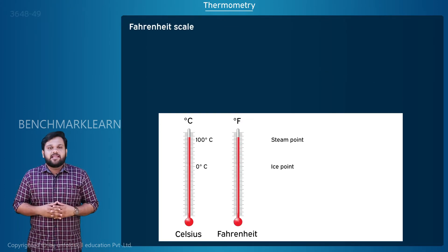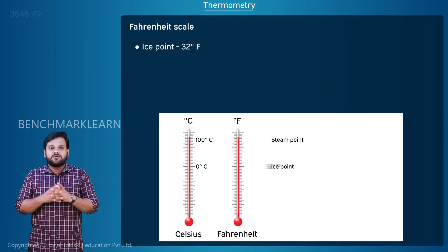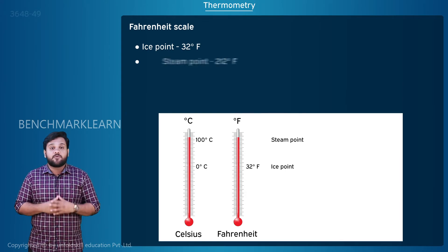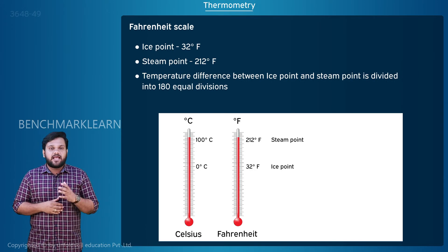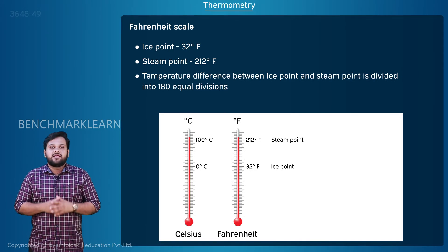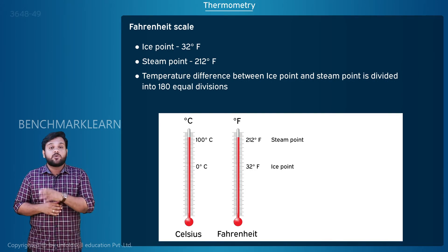In Fahrenheit scale, ice point is 32 degrees Fahrenheit and steam point is 212 degrees Fahrenheit. The temperature difference between ice point and steam point is divided into 180 equal divisions.